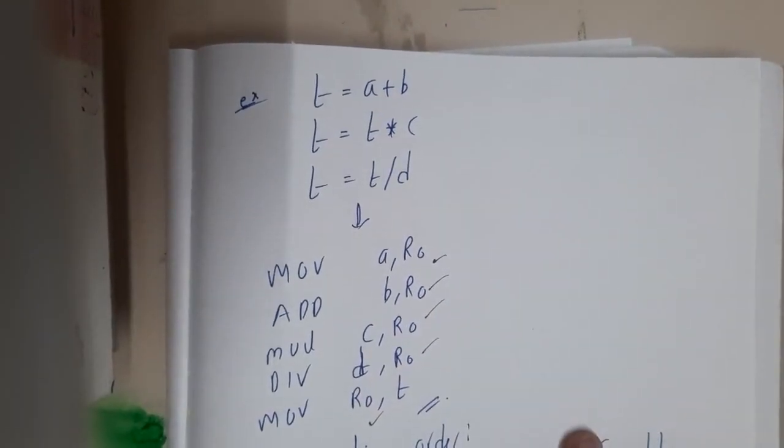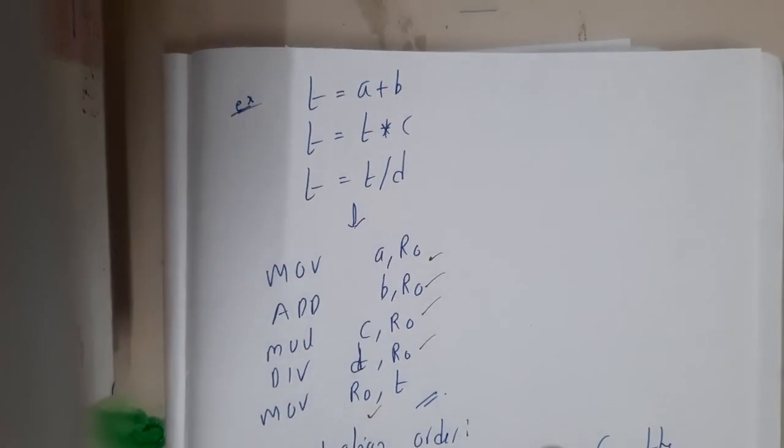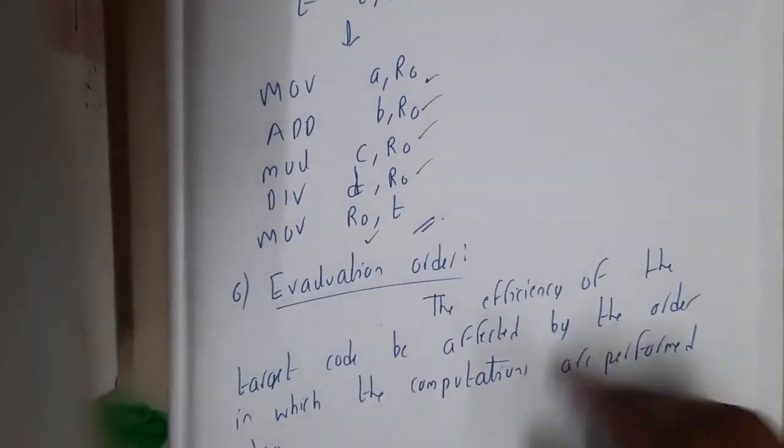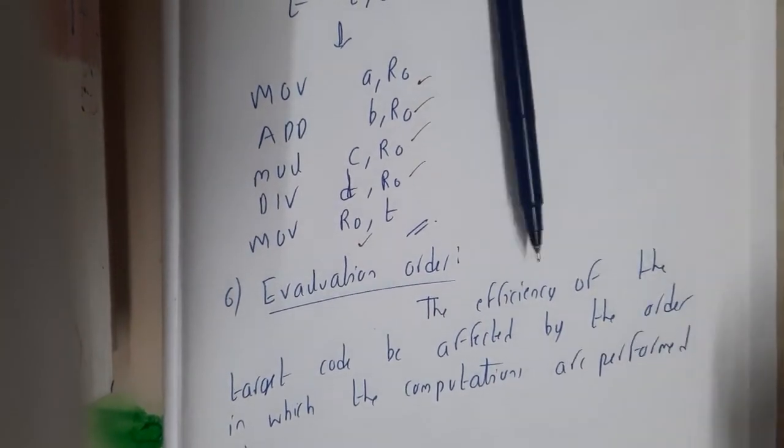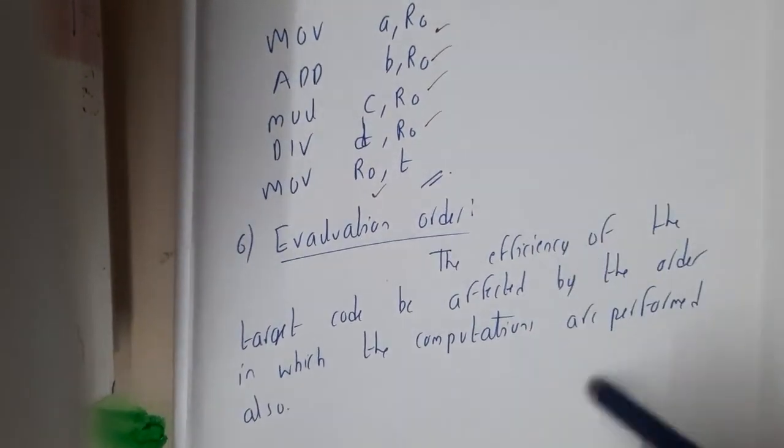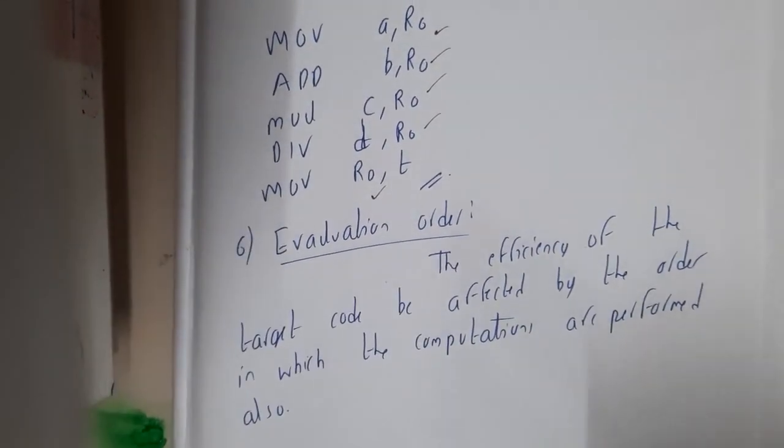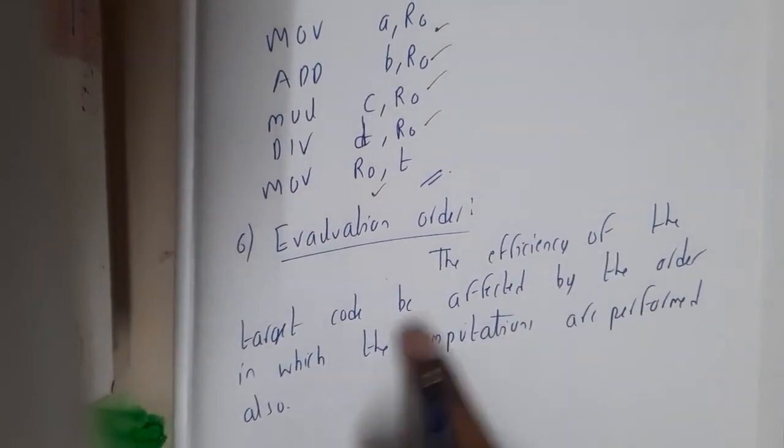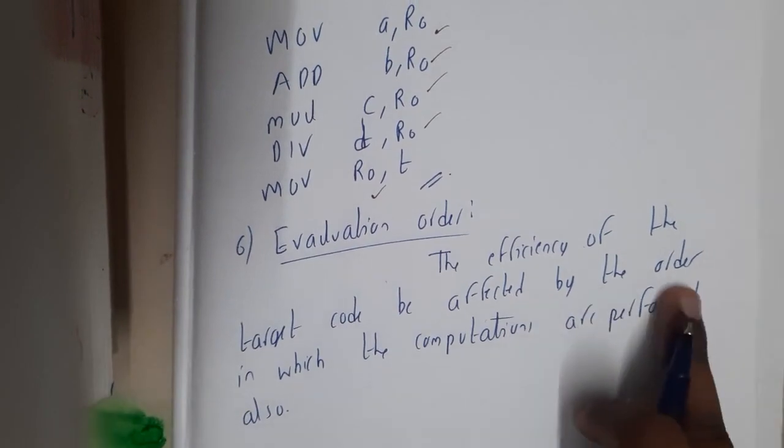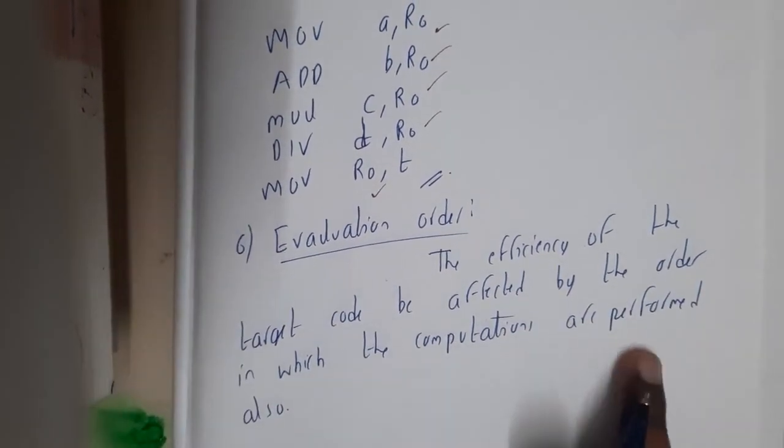The evaluation order will also play an important role because sometimes a few codes on different evaluation will end up at different values. The efficiency of the target code can be affected by the order in which the computations are performed.